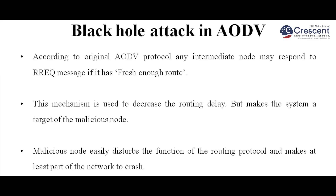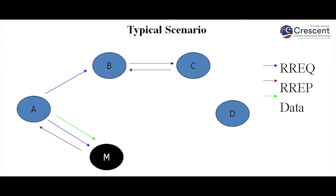Without checking its routing table, the malicious node simply gives a reply message to the source node. Once the source node receives the reply, it starts sending the data. The malicious node easily disturbs the function of the routing protocol and makes at least part of the network crash, because it won't forward the data to the next node. In this typical scenario, A wants to send data to destination D. B and malicious node M are neighbors of A. A sends the route request to B and M. M immediately gives a reply without checking for a route. A starts sending data to M, which simply absorbs it and won't forward the data. This attack is called the black hole attack.